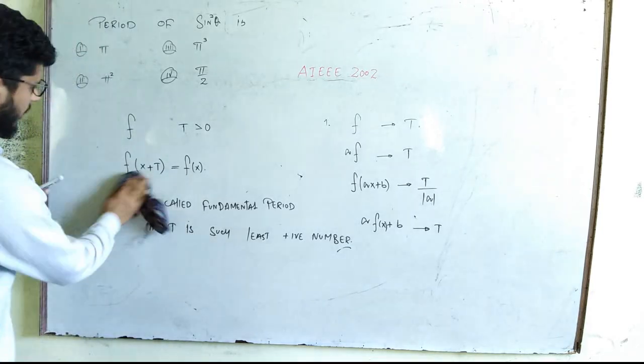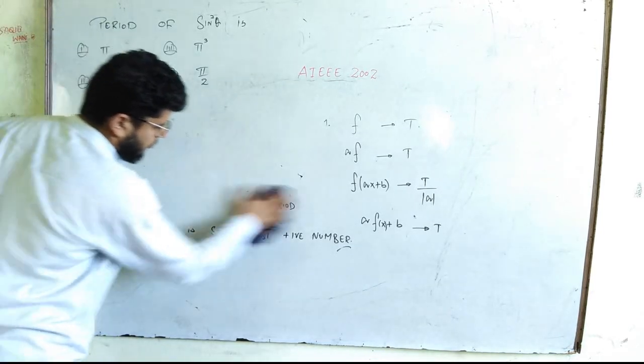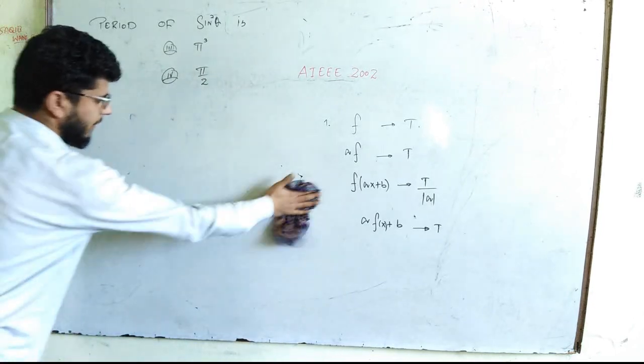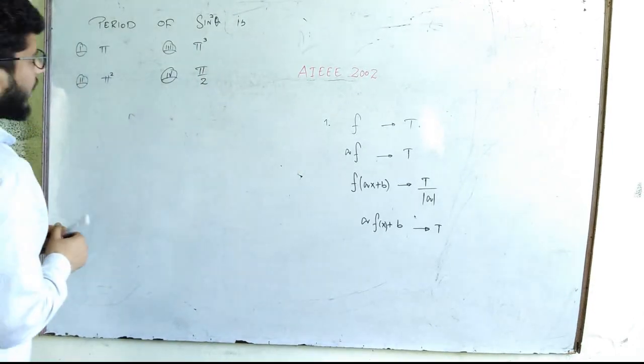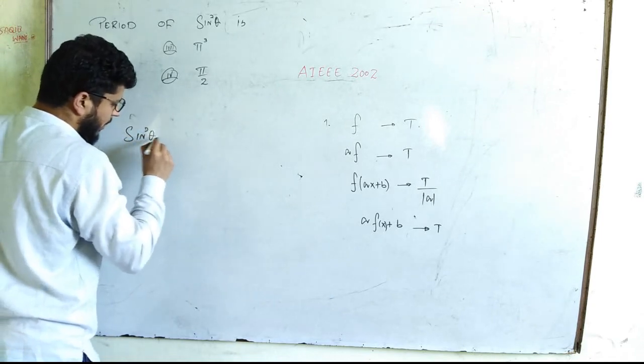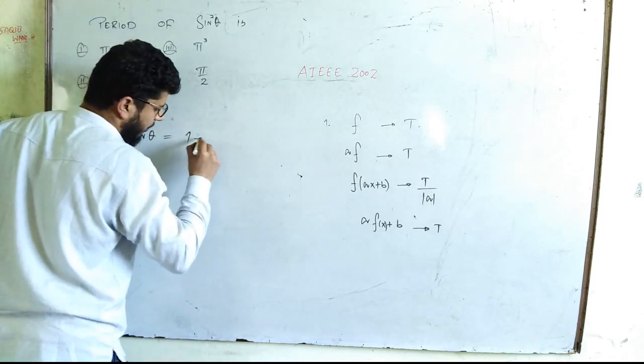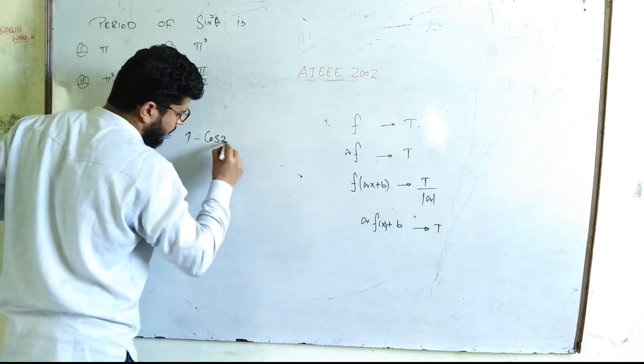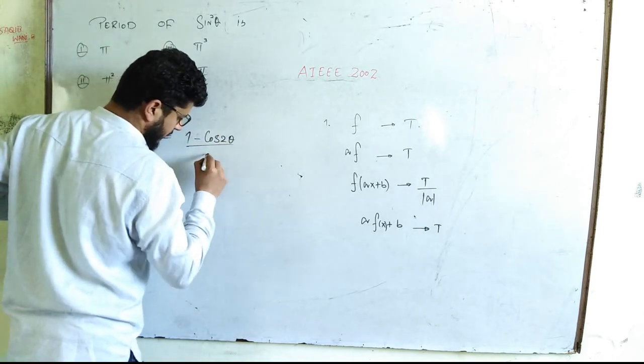Now, let's proceed to solve this one. You can write it as 1 minus cosine of 2 theta upon 2.